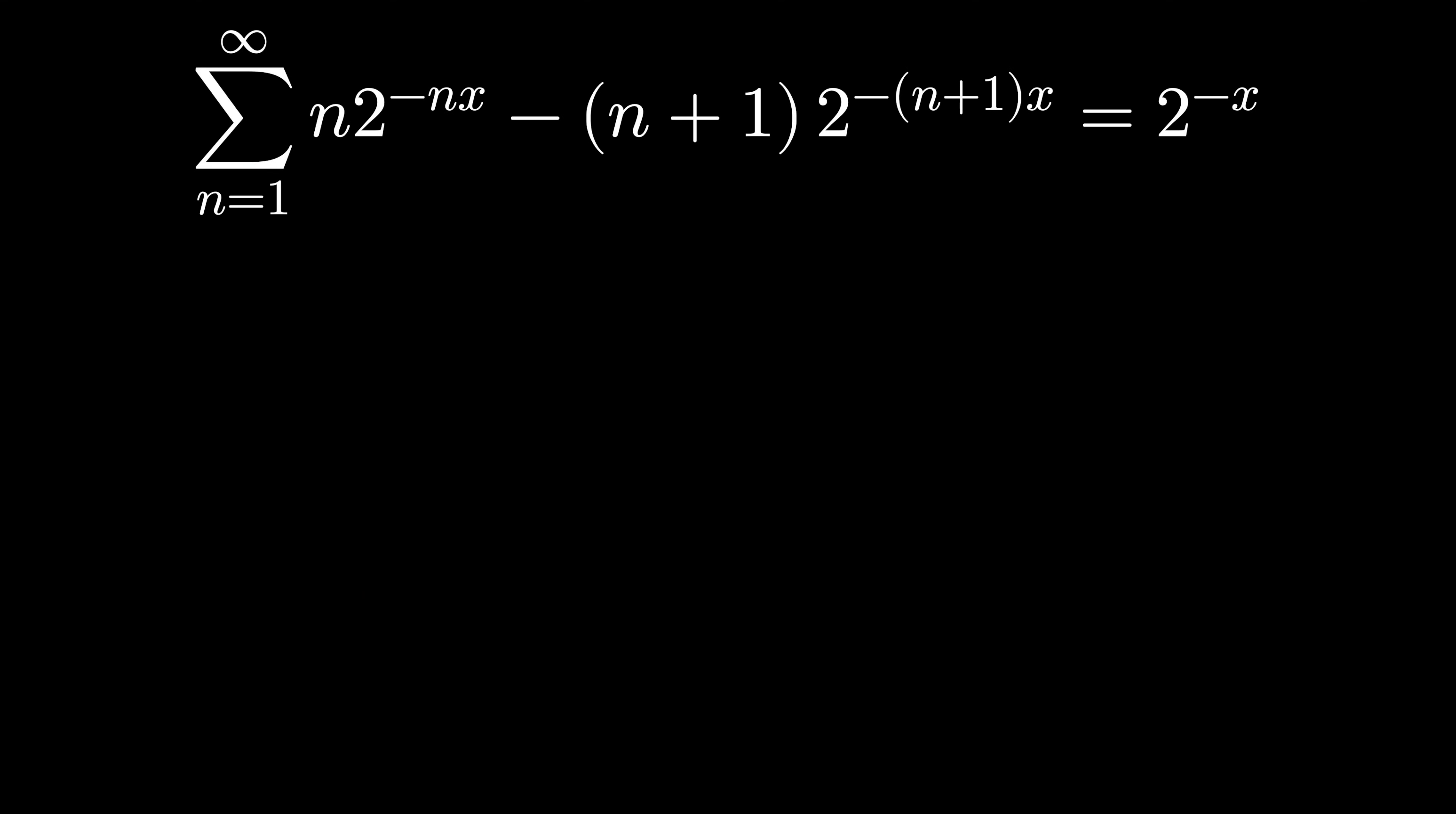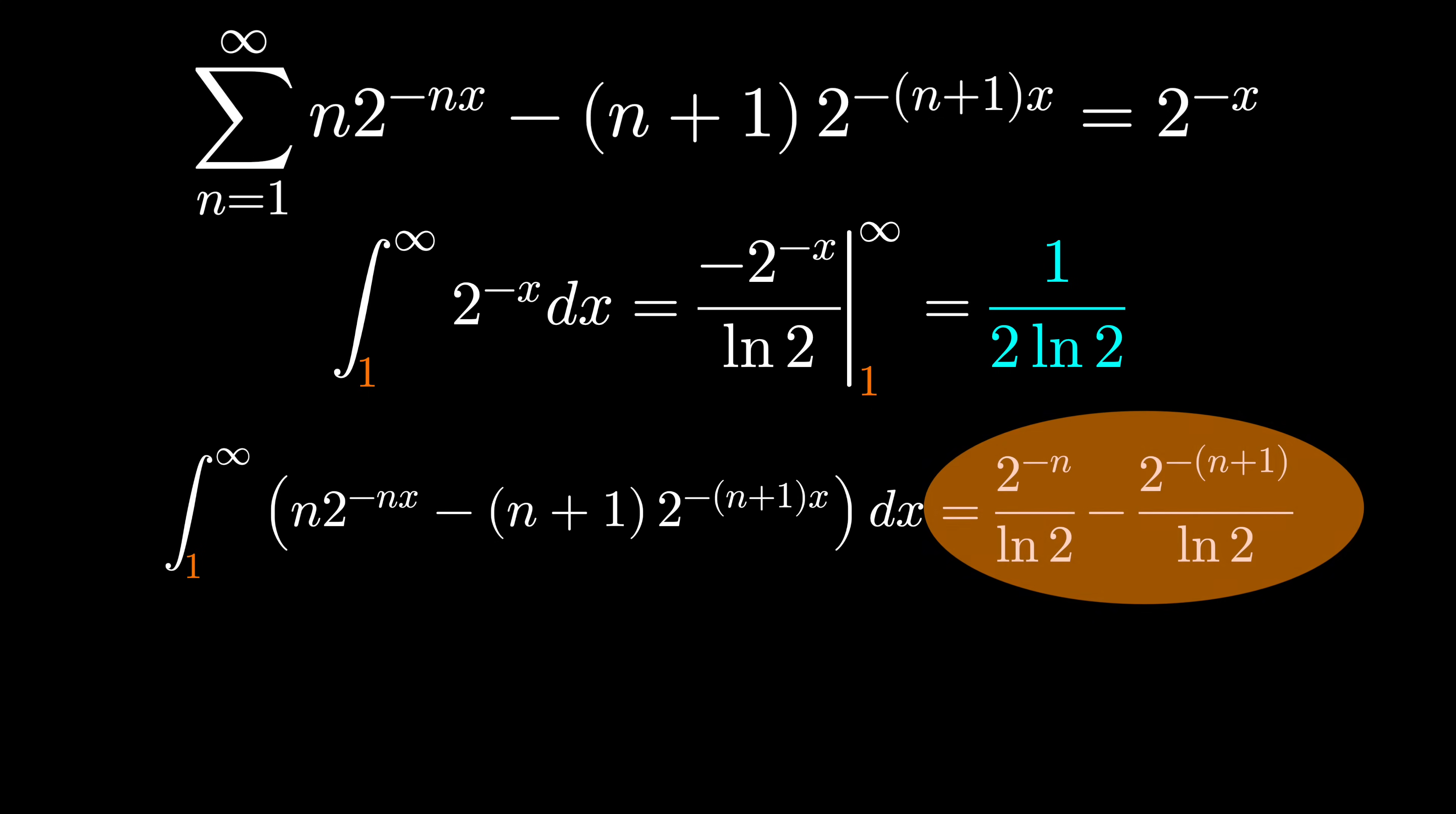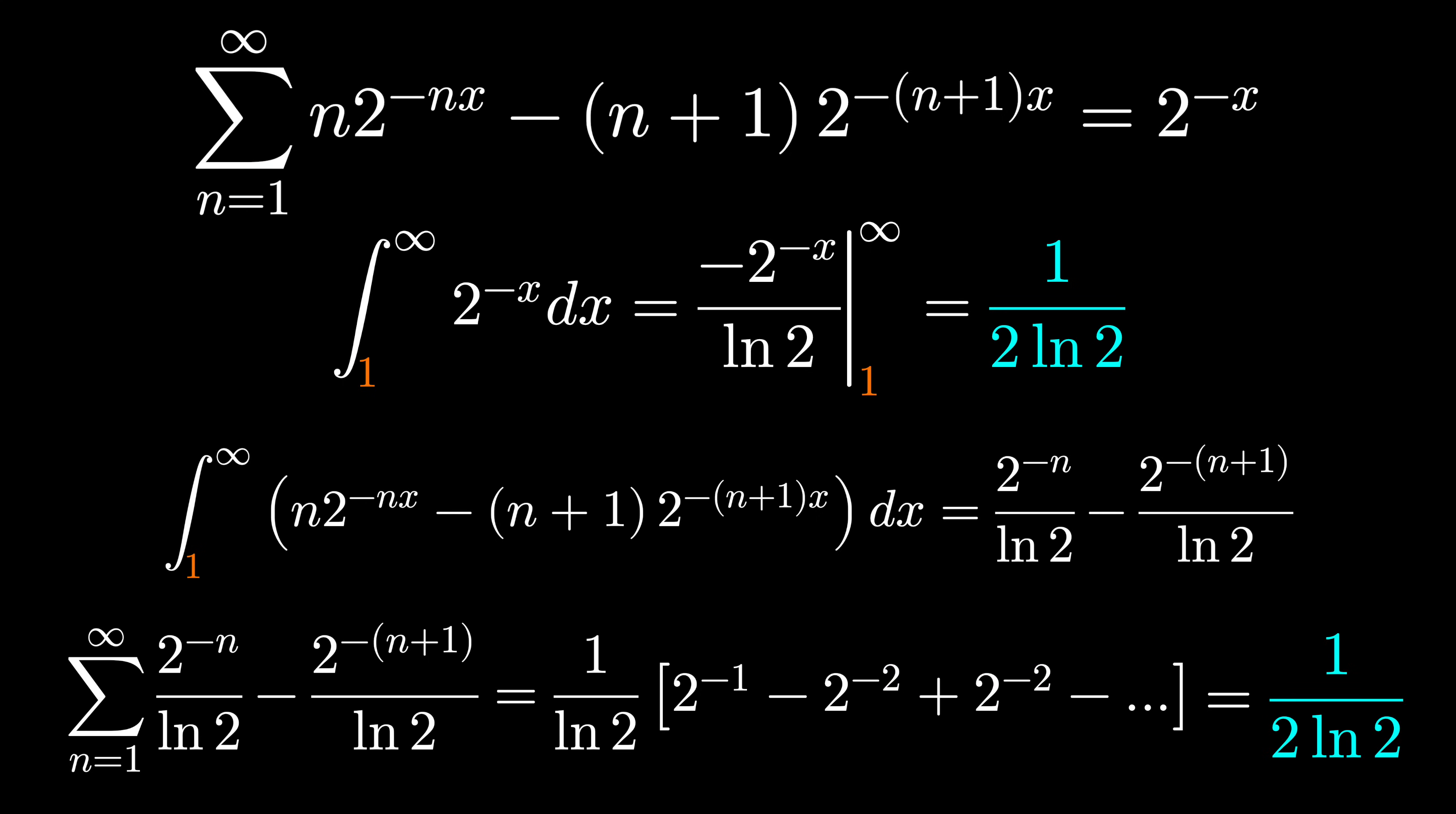Performing the discrete sum first still gives us two to the minus x, and then we anti-derive this with different bounds. And when we perform the continuous sum first, we see we're no longer ending up with zero. So we actually have something to add up with our discrete sum. And when we write out this pattern, we start to see we get another sort of cancelling thing going on here. But wouldn't you know it, if you actually compute it, they end up being the same answer.